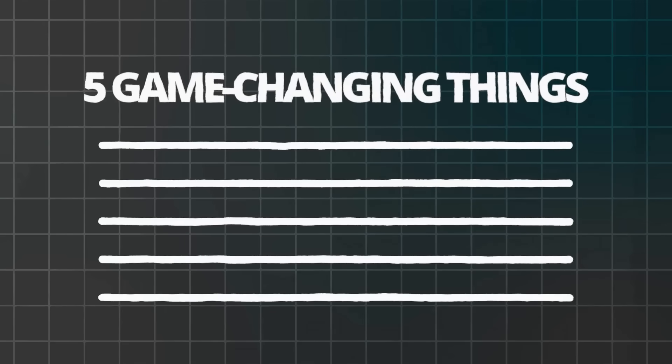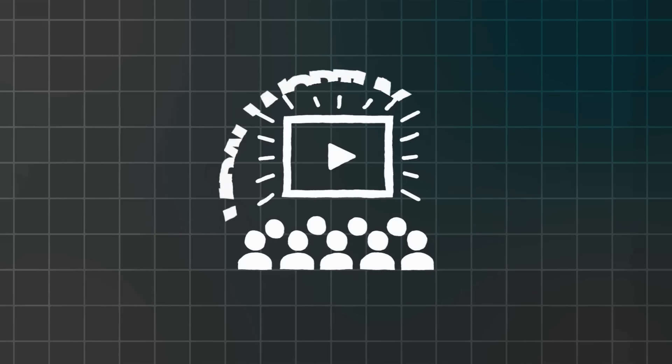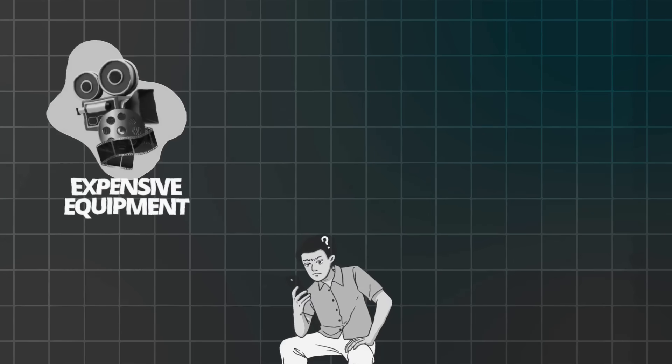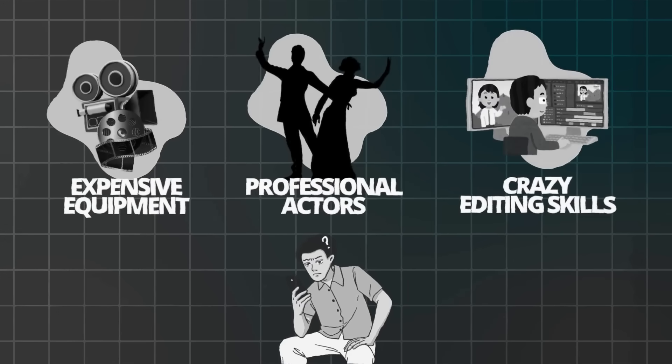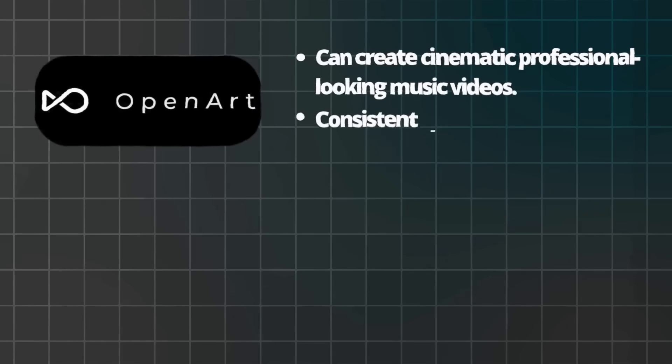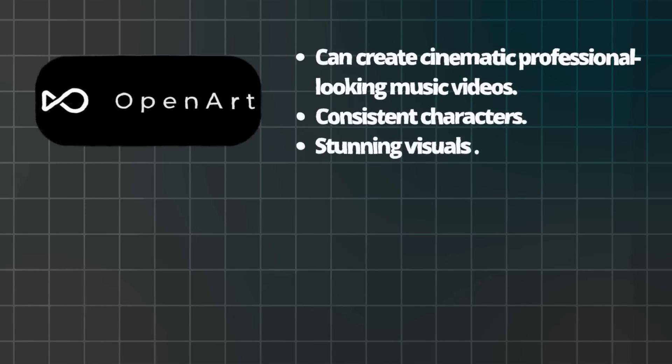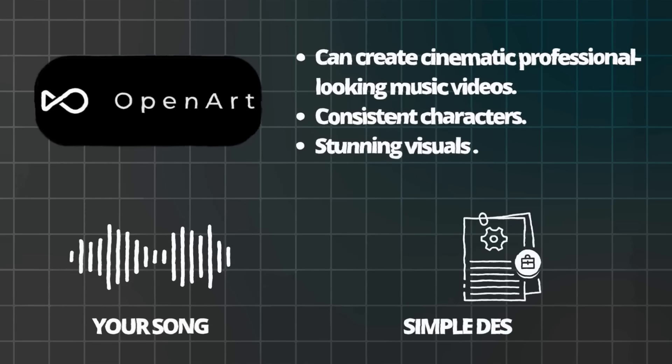To help you make music video creation way easier, here are five game-changing things I learned that will help you create viral-worthy videos in literally minutes instead of hours. Most creators think they need expensive equipment, professional actors, or crazy editing skills to make music videos that actually get views. That's when I discovered OpenArt's music video features, and honestly it completely changed everything. This tool can create cinematic, professional-looking music videos with consistent characters and stunning visuals using just your song and a simple description.